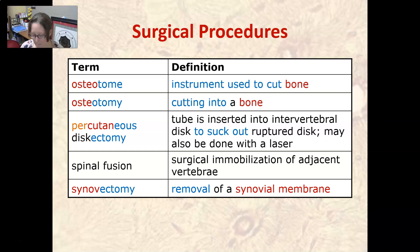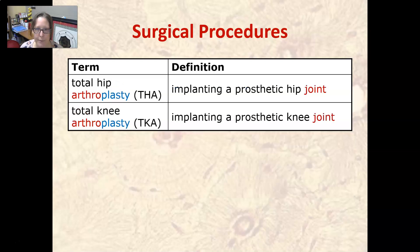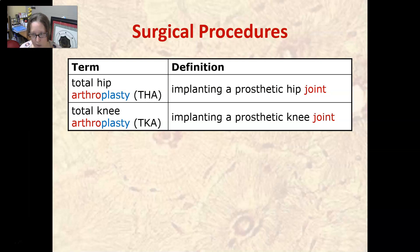A total hip arthroplasty, or THA, is the implanting of a prosthetic hip joint, and a total knee arthroplasty is the implanting of a prosthetic knee joint. These are two of the most common surgical procedures, especially with osteoporosis and falls, where people either break a hip or have bad knees.